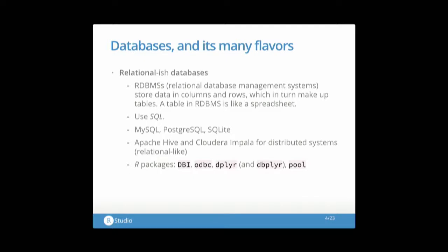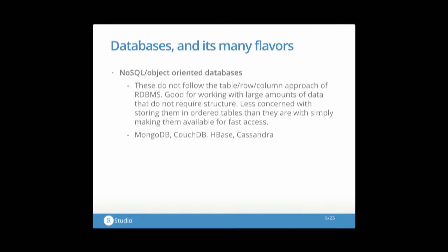Relational databases use SQL, which is a language for querying data. A few popular open-source relational databases are MySQL, Postgres, and SQLite. Recently, for distributed systems, you also have things like Apache Hive and Cloudera Impala, which are relational-like. Most of these packages work really well with relational databases. There's nothing stopping them from working with NoSQL databases, but there needs to be more infrastructure there, and we haven't gotten to it yet.